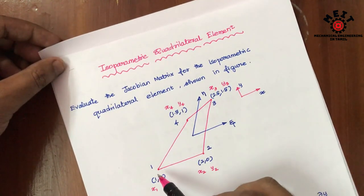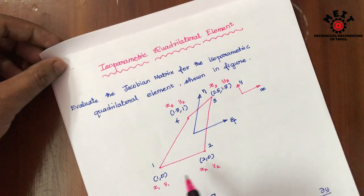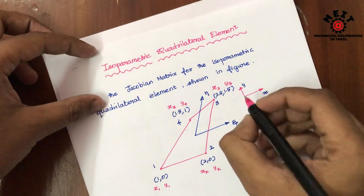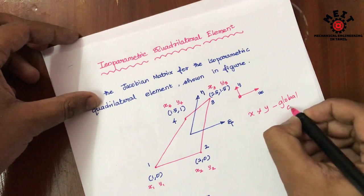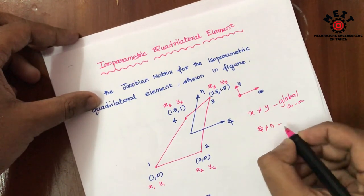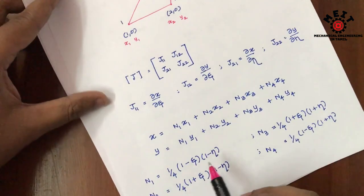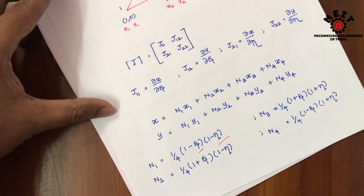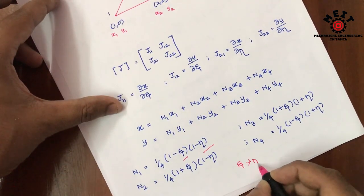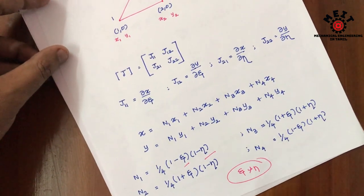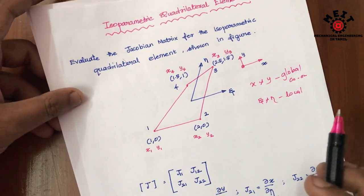This is the element having four nodes — one, two, three, four — and the coordinates will be given for each node. There are two different coordinate systems. The first is x and y, known as global coordinates, and the second is epsilon and mu, the local coordinates. The shape function for a quadrilateral element is expressed in terms of local coordinates, so we must convert our global coordinates into local coordinates.